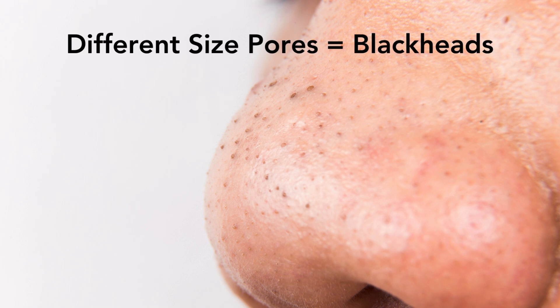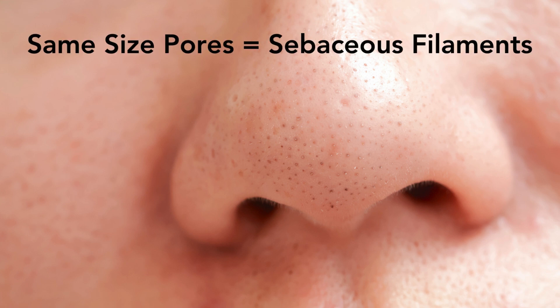Let's guess which is which. Here the pores are different sizes — these are blackheads. Here again the pores are different sizes — blackheads. And here the pores are roughly the same size — so these are sebaceous filaments.